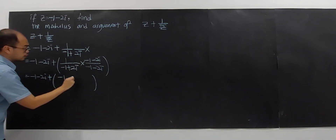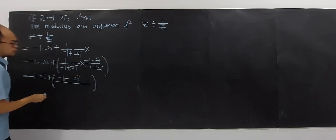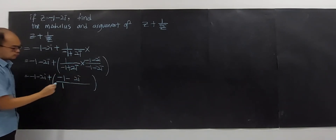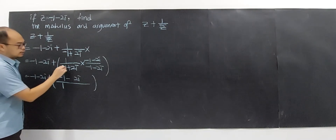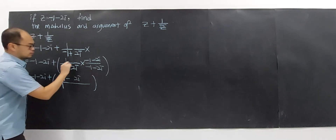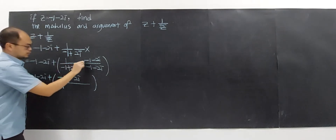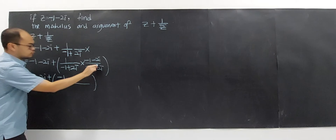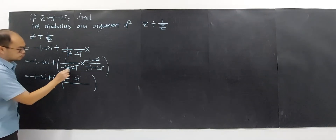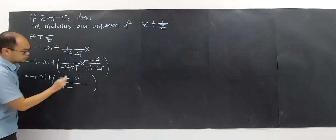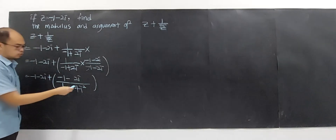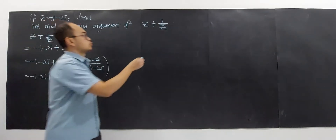Now let's simplify. You have negative 1 minus 2i on top. Multiplying 1 by negative 1 gives negative 1, and negative 1 times negative 1 gives 1. The middle terms cancel out when you do the expansion. You get 1 for the real part of the denominator, and positive 2i minus 2i cancel. Then you have negative 2 times 2 giving 4i squared.